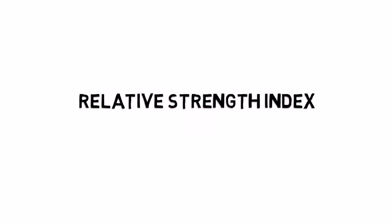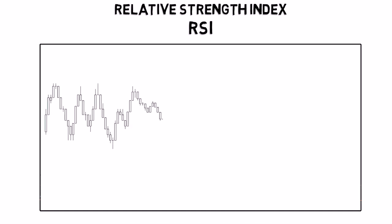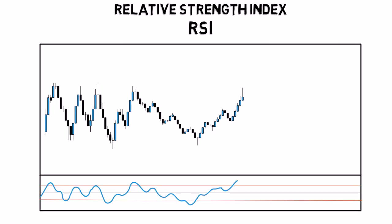The relative strength index or RSI is a momentum indicator which measures overbought and oversold conditions in the market. The indicator oscillates between 0 and 100, with values below 30 traditionally showing oversold and above 70 overbought conditions in the market.